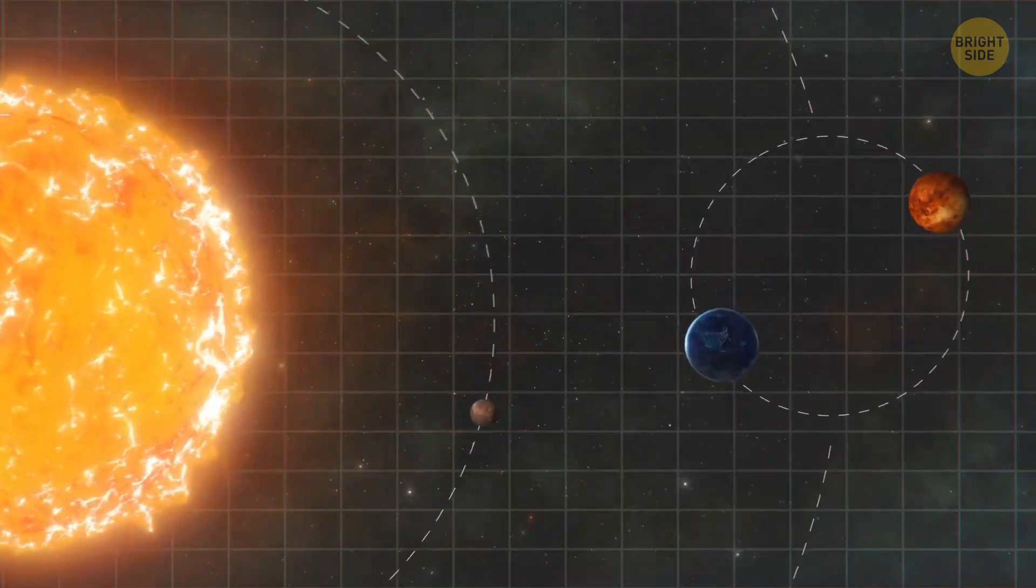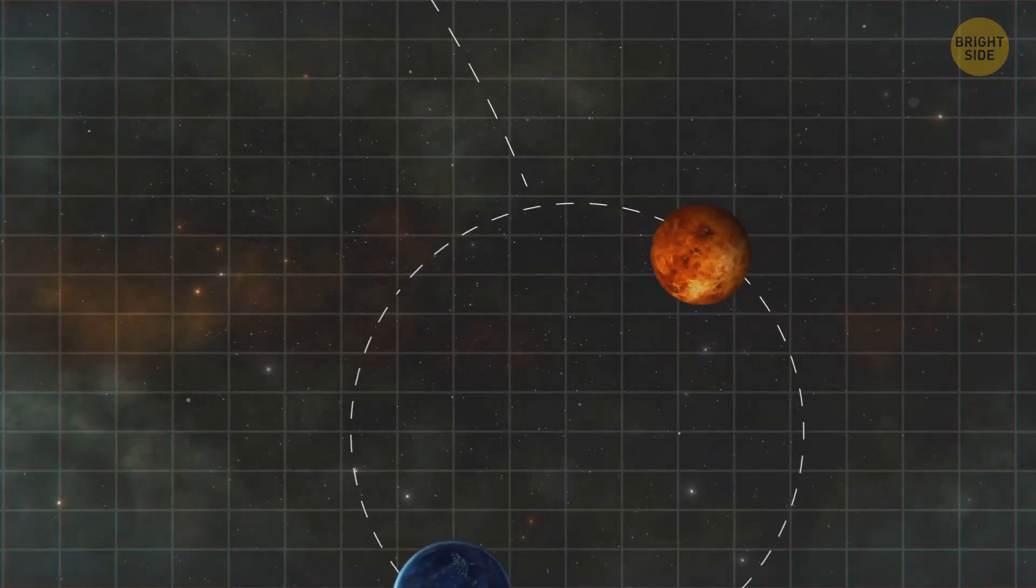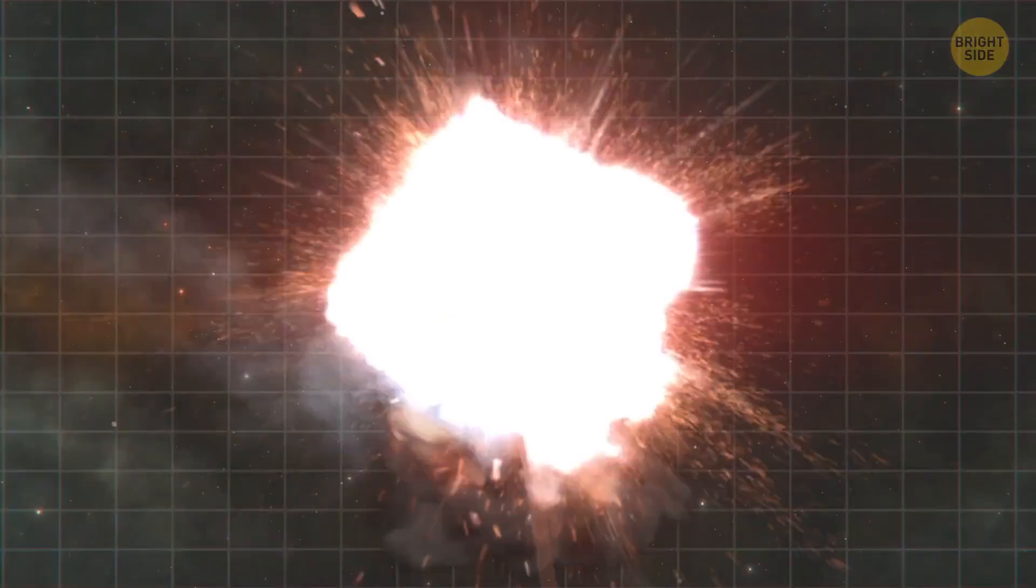But if Venus moved with the same speed as the Moon has now, the two planets would crash into each other in the nearest future. Uh-oh.